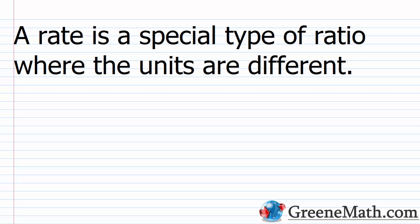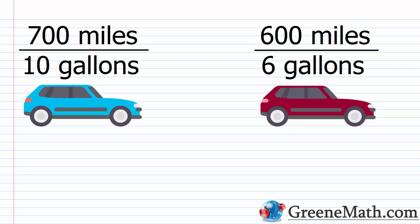Now let's talk about rates. A rate is a special type of ratio where the units are different. Generally, when we work with rates, we're talking about unit rates — how much of some quantity relates to one unit of another quantity. A very easy example is miles per gallon. How many miles do you get per one gallon of gas? You fill your tank, drive until empty, and divide the miles by the number of gallons.